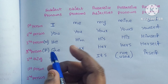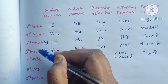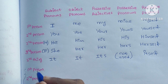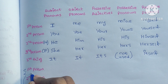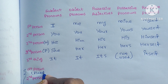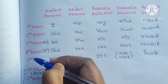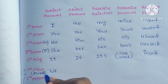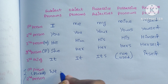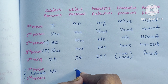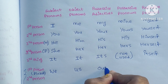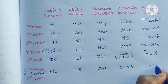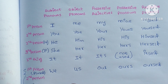These are the singular pronouns, and now we move to the plural forms. First person plural: subject is 'we', object is 'us', possessive adjective is 'our', possessive pronoun is 'ours', and reflexive is 'ourselves'.